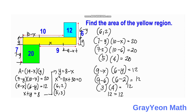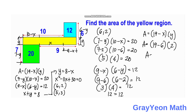Now we find the area for this first solution. The area equals (19 minus x) times y. So area equals (19 minus 6) times 2 equals 13 times 2, giving us 26 square units.